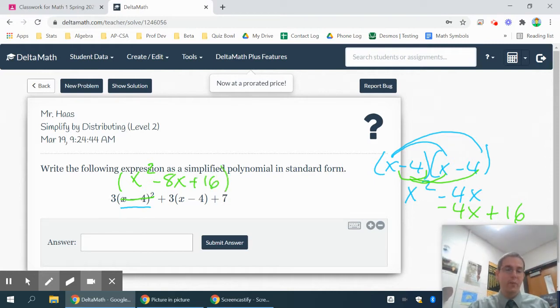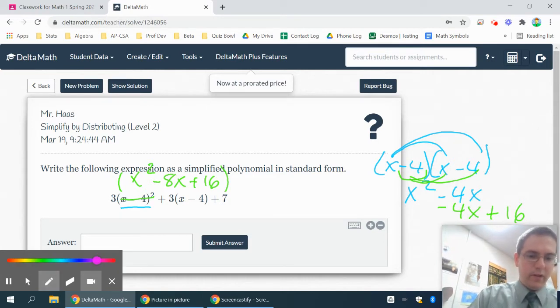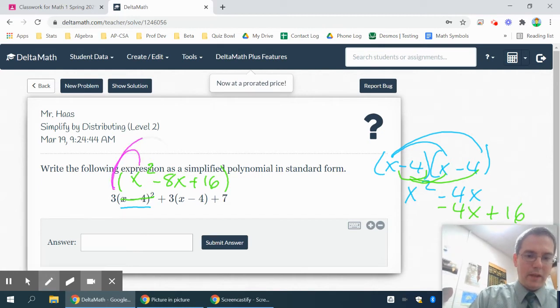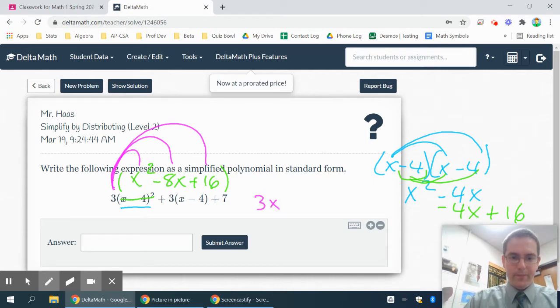So that's your first step. Now what I have to do is distribute that 3 into this parenthesis here. So I'll take my 3 and multiply it into this. So that's going to give me 3x squared minus 24x plus 48.